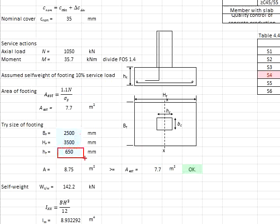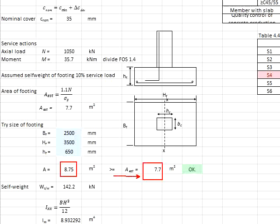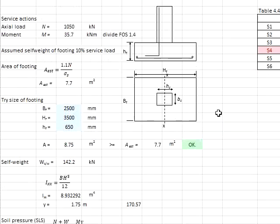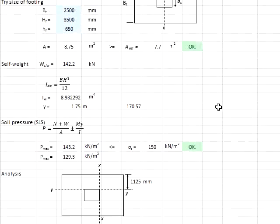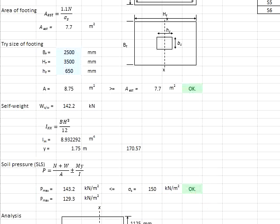Assuming the height of the base is 650 mm, the self-weight of the footing can be determined, which is slightly higher than the estimated 10% of the actual load. You should recheck the estimated self-weight to verify that the provided area is sufficient. Since the provided area exceeds the required area, revision may not be necessary. At the end of the day, you will need to check the stress again, and as long as the final check is passed, there should be no issue with settlement.